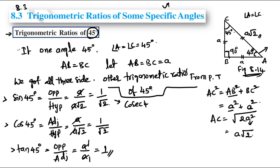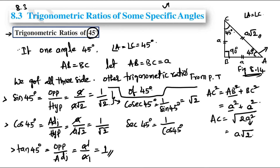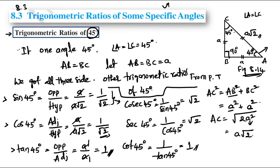For cosec 45°, it equals 1 over sin 45°, the reciprocal, so cosec 45° equals √2. Sec 45° equals 1 over cos 45°, which also gives √2. Cot 45° equals 1 over tan 45°, and since tan 45° equals 1, cot 45° also equals 1.